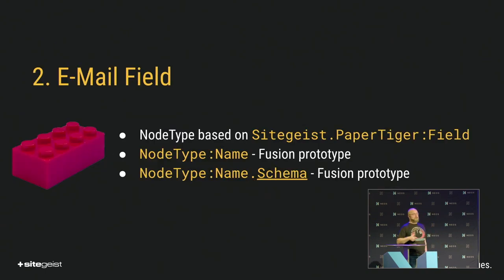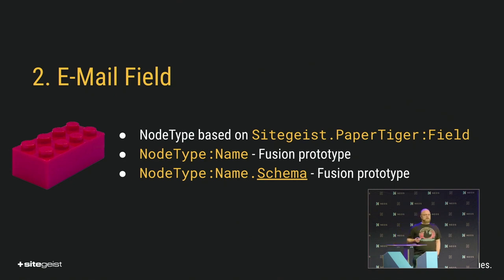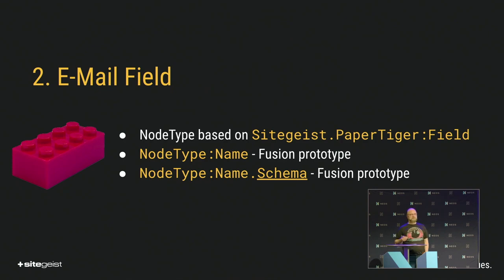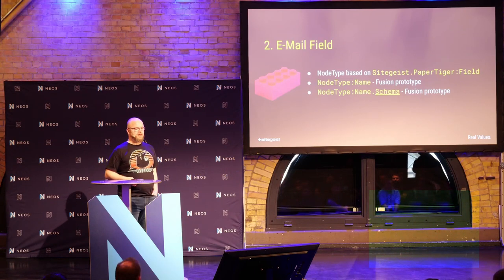The second thing is defining a custom field. To do that, you will create a node type which is derived from or has a supertype of SideGuys PaperTiger field. Together with this node type, you have to specify two Fusion prototypes. The first one, named just like the node type, is the Fusion prototype responsible for rendering. And the second one you want to specify is the schema, which is named like the node type with the postfix '.schema', which is obviously responsible for defining the schema.